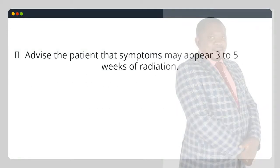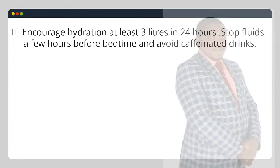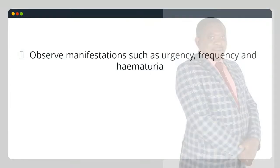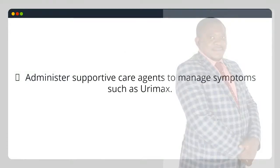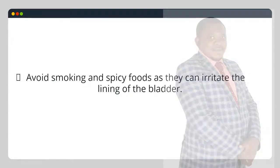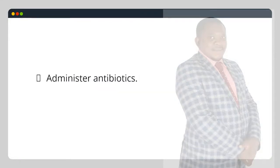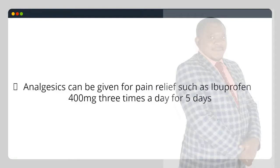Advise the patient that symptoms may appear 3–5 weeks after radiation. Encourage hydration of at least 3 liters in 24 hours; stop fluids a few hours before bedtime and avoid caffeinated drinks. Observe manifestations such as urgency, frequency and hematuria. Administer supportive care agents to manage symptoms such as Uromax. Avoid smoking and spicy foods as they can irritate the lining of the bladder. Administer antibiotics. Analgesics can be given for pain relief such as ibuprofen 400 mg three times a day for 5 days.